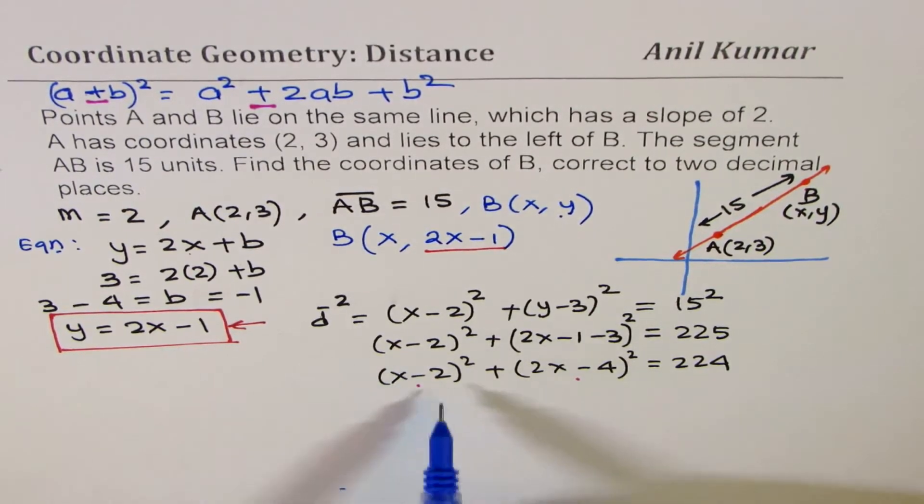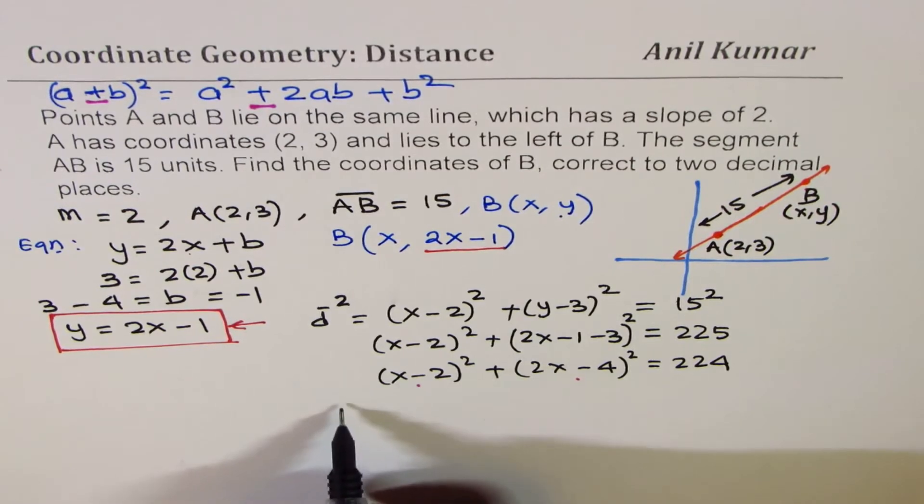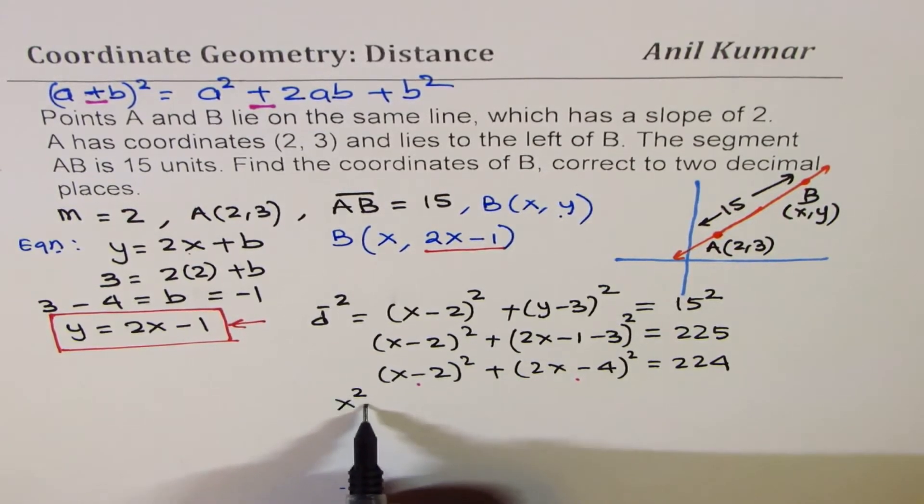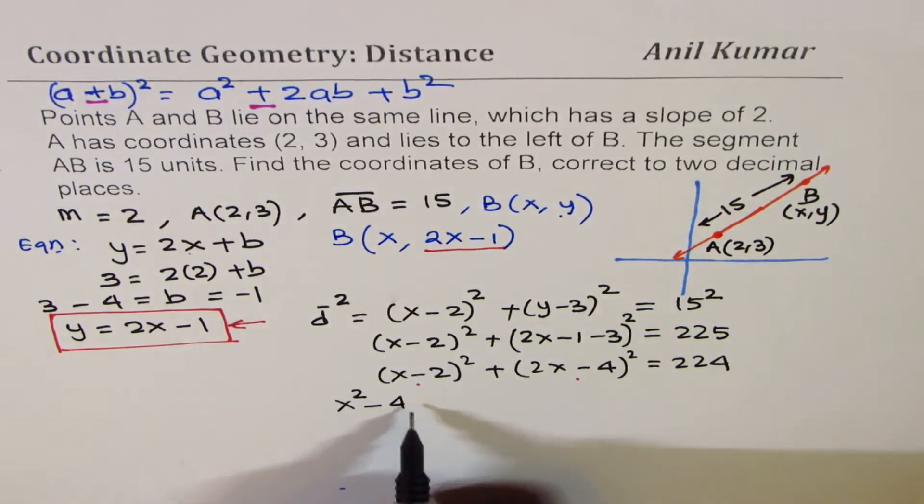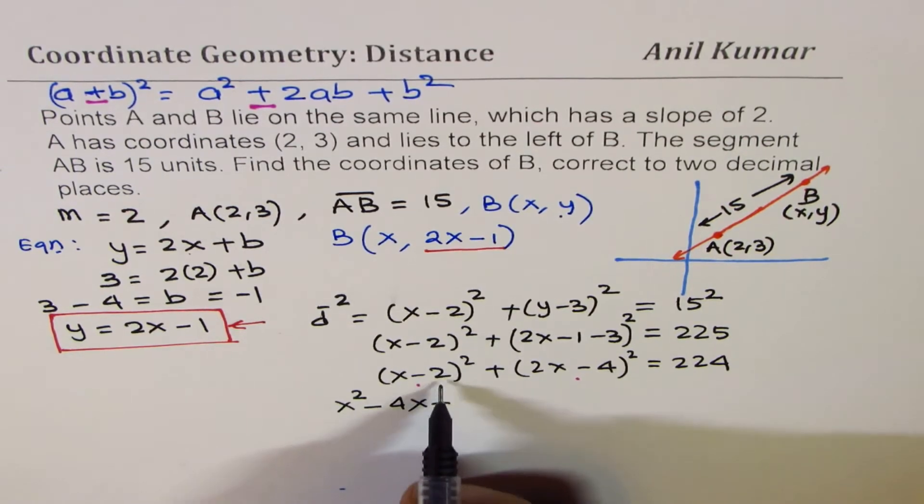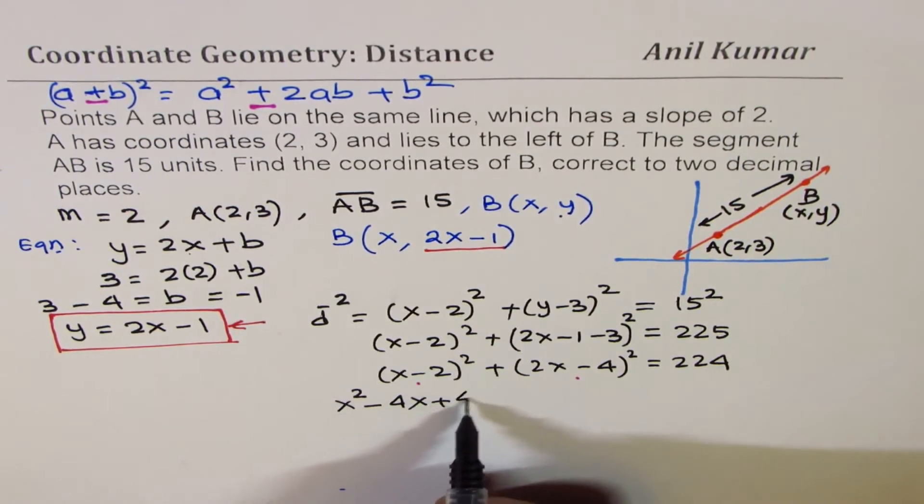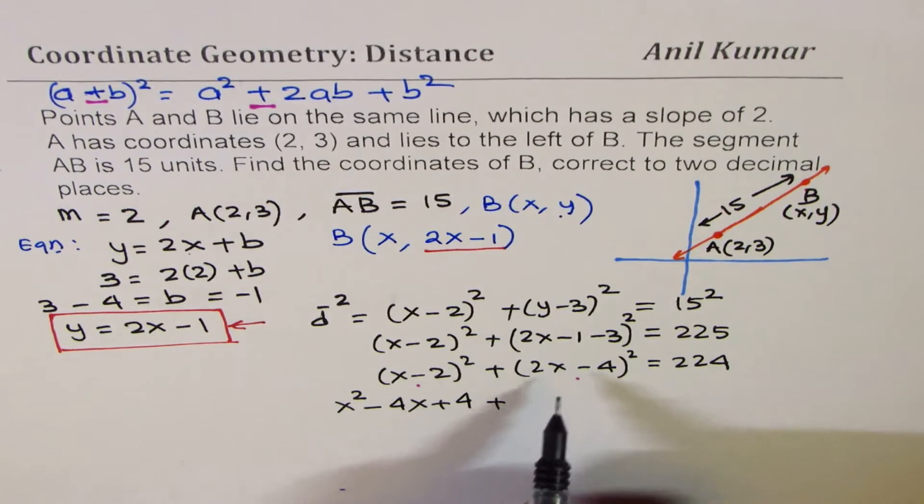In both these cases, we have minus, correct? Therefore, we can expand (x - 2)² as x² - 2ab means 4x + 2², right? Which is 4. Now, in this case, you have to square (2x)². So, we get 4x². Be careful.